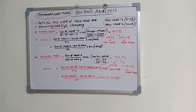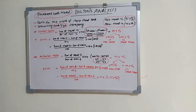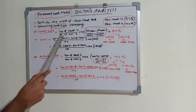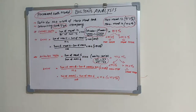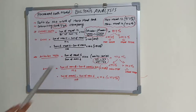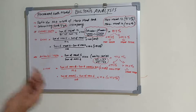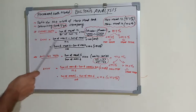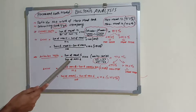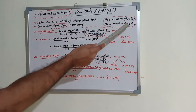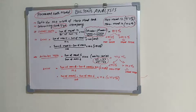According to Bolton, the mandibular mesiodistal dimension will be 91.3% of the maxillary molar-to-molar (6 to 6), and canine-to-canine it will be 77.2%. That is, if the maxillary teeth are 100, the mandibular molar-to-molar will be 91.3% and the mandibular canine-to-canine will be 77.2%. This is the idealistic ratio.